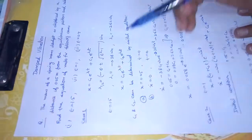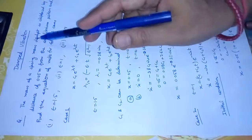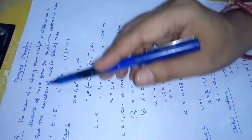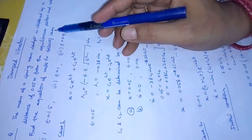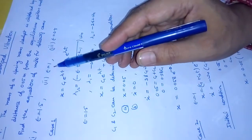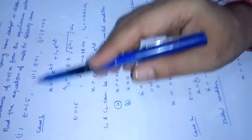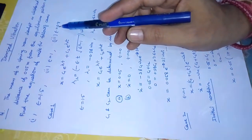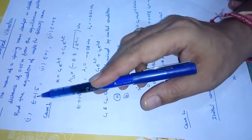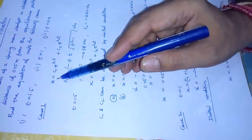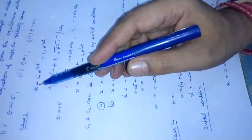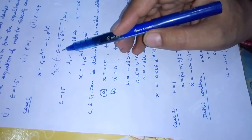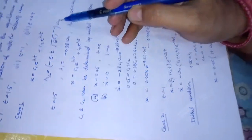A spring-mass-dashpot system is displaced by 0.05 m from the equilibrium position and released. Find the equation of motion for the cases: ε = 1.5, ε = 1, and ε = 0.5. For Case 1, ε > 1 (over-damped), the displacement is x = c₁e^(λ₁t) + c₂e^(λ₂t), where λ₁,₂ = (-ε ± √(ε² - 1)) · ωₙ.